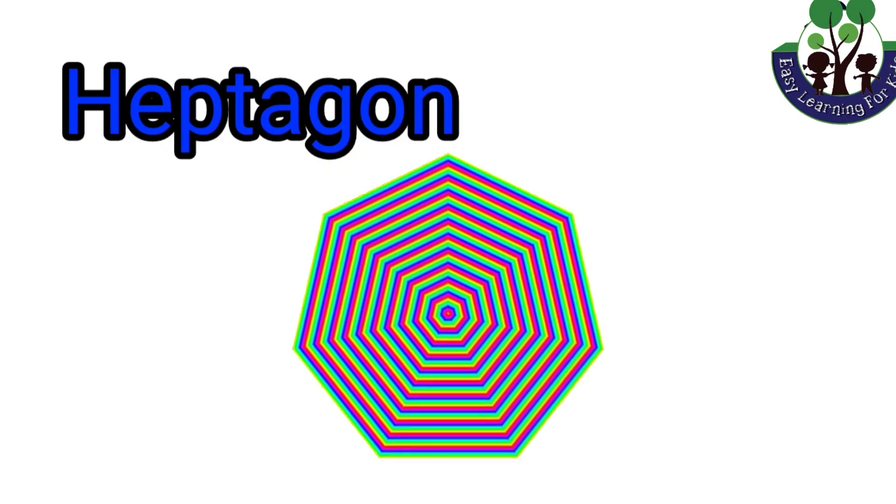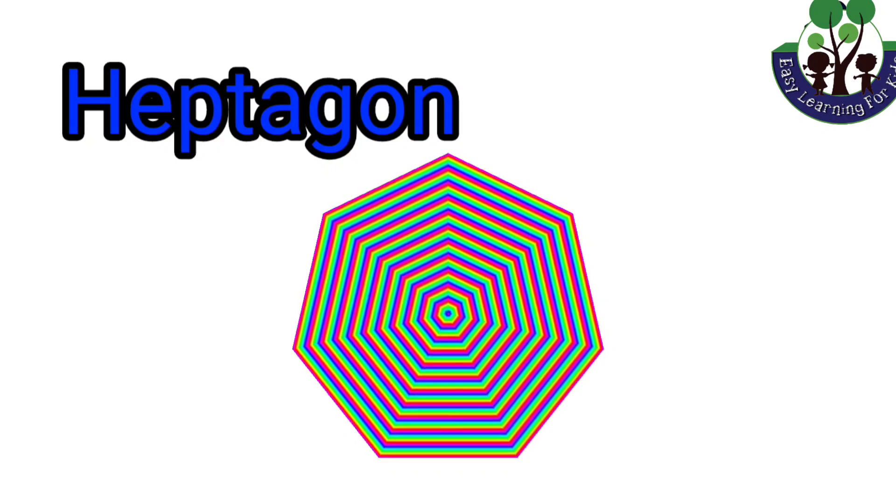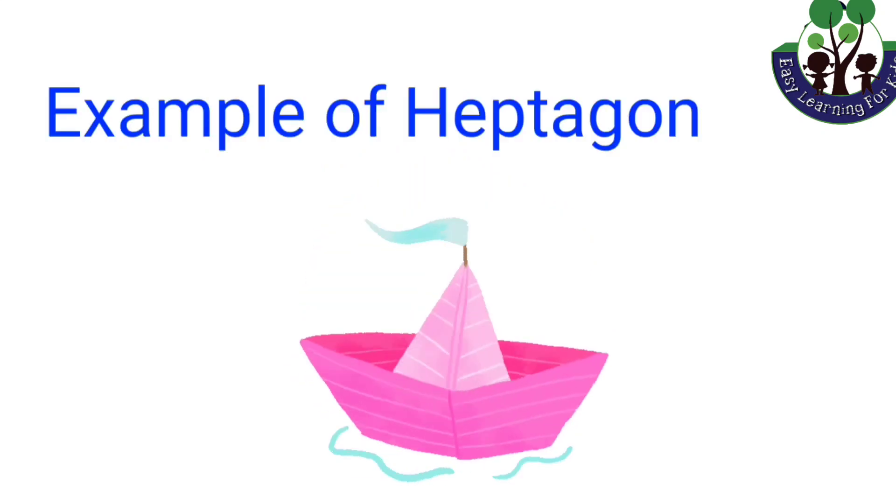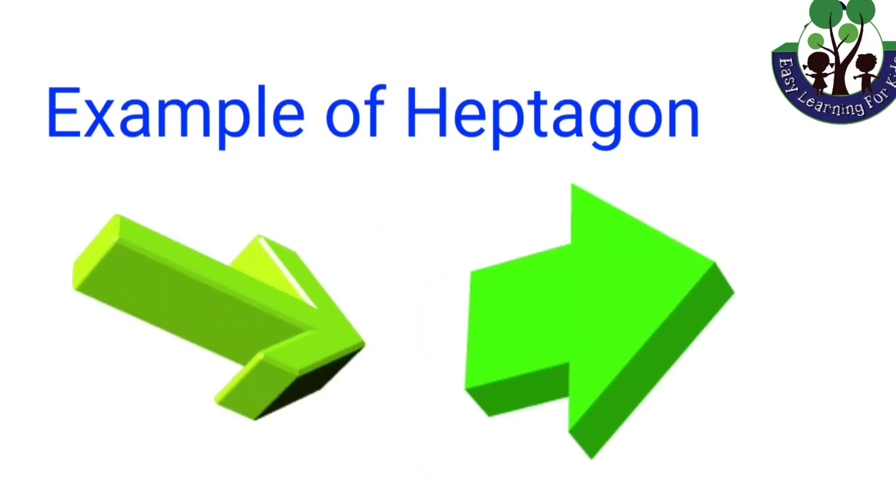Heptagon. A heptagon is a seven-sided polygon. Like paper board and arrowhead.